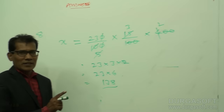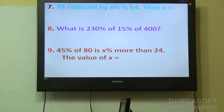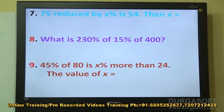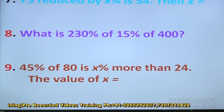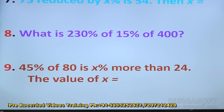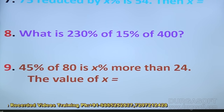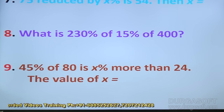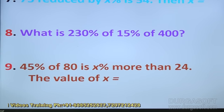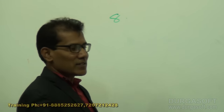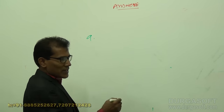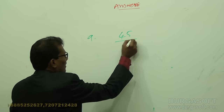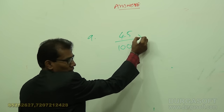Coming to question number 9 — it is a little bit different from previous questions. The question is: 45 percent of 80 is x percent more than 24. We write 45 percent of 80 as it is.